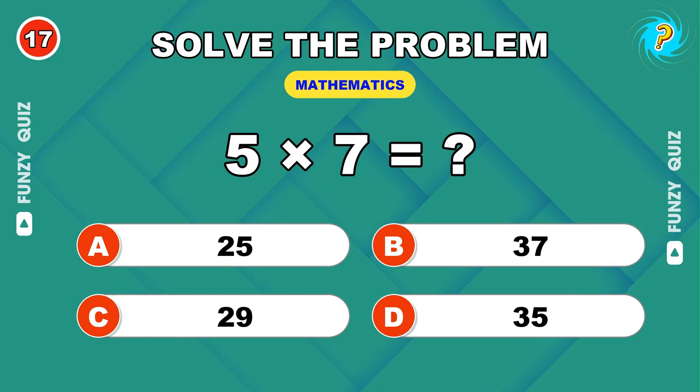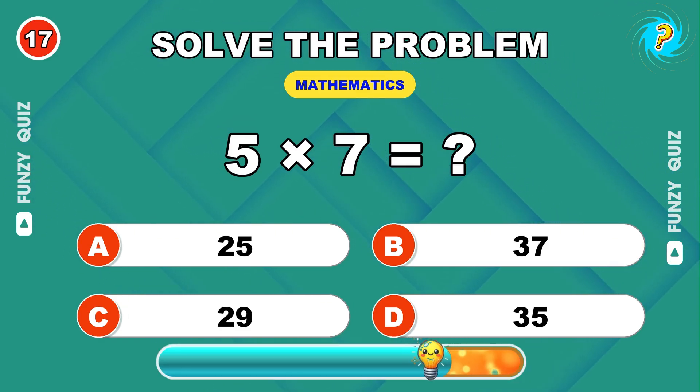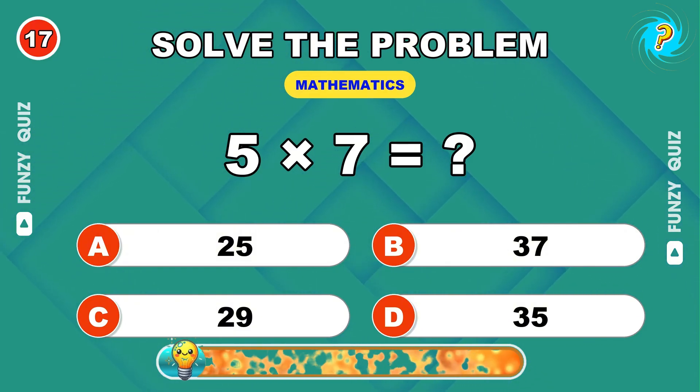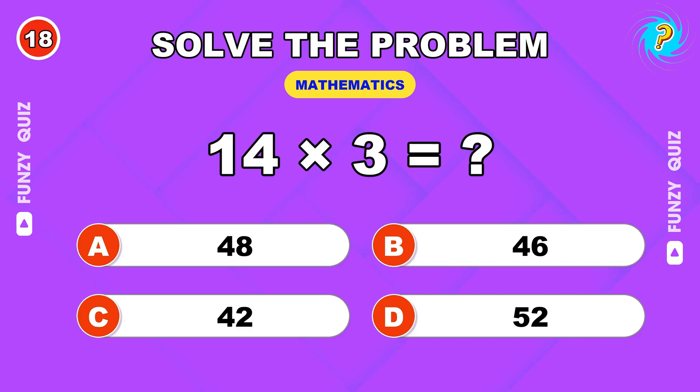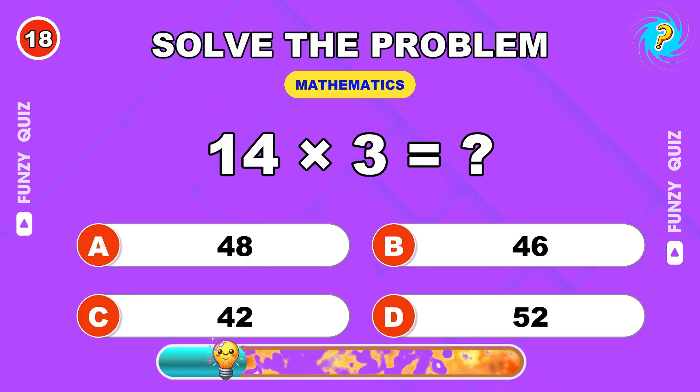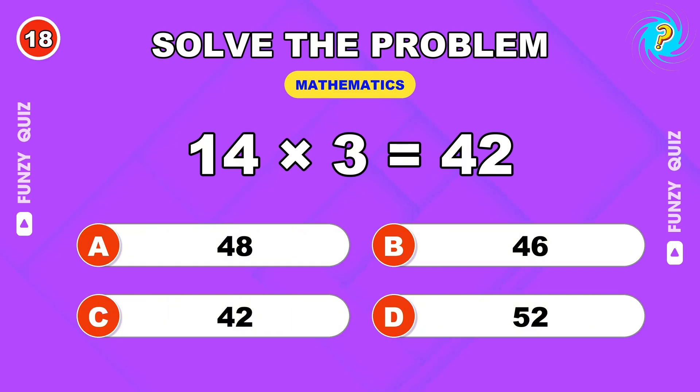Classic question. 5 times 7? 35. Calculate this. 14 times 3? 42.